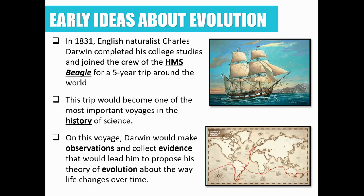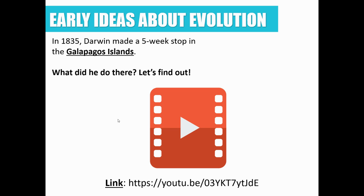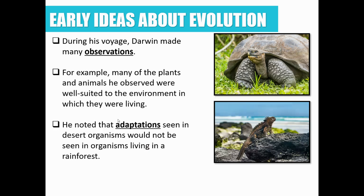Charles Darwin, in the early 1830s, completed his college studies and joined the crew of the HMS Beagle for a five-year trip around the world. He stopped at a group of islands called the Galapagos Islands. This voyage would become one of the most important trips in the history of science. He made tons of observations and collected lots of evidence that led him to propose his theory of evolution, explaining why and how life changes over time. In 1835, Darwin made a five-week stop in the Galapagos Islands — a cluster of 18 islands in the Pacific Ocean known as a melting pot for marine and terrestrial species, with tremendous biodiversity.